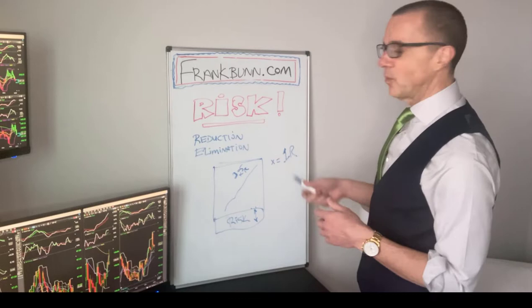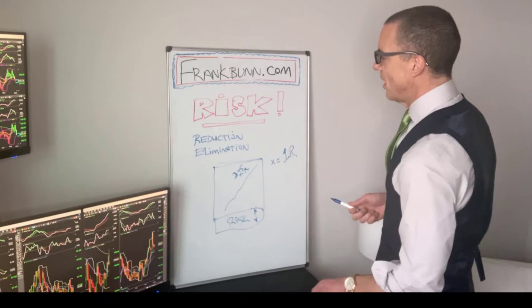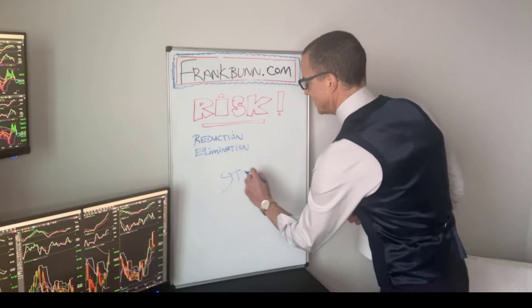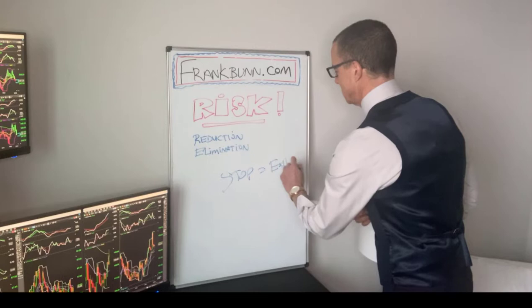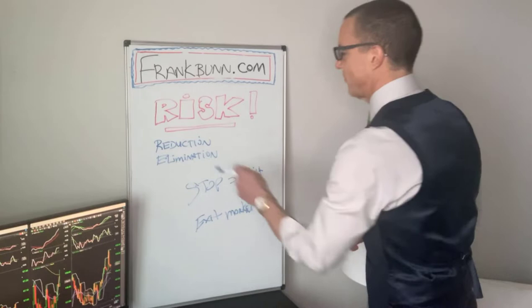Once we have defined risk, we're going to look at the reduction and elimination techniques. For most people, there are only two ways you're generally taught when learning trading: one is a stop, which is an order to sell at a predetermined price, and the other is to outright exit the market. These are the two known methods for reducing or eliminating risk.